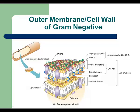This slide shows the cell envelope of gram-negative bacteria, composed of three layers. The innermost layer is the plasma membrane. The second layer is the cell wall, made of only one layer of peptidoglycan — so the cell wall of gram-negative bacteria is thin, and there is no teichoic acid in its structure. The third, outermost layer is the outer membrane, made of LPS.